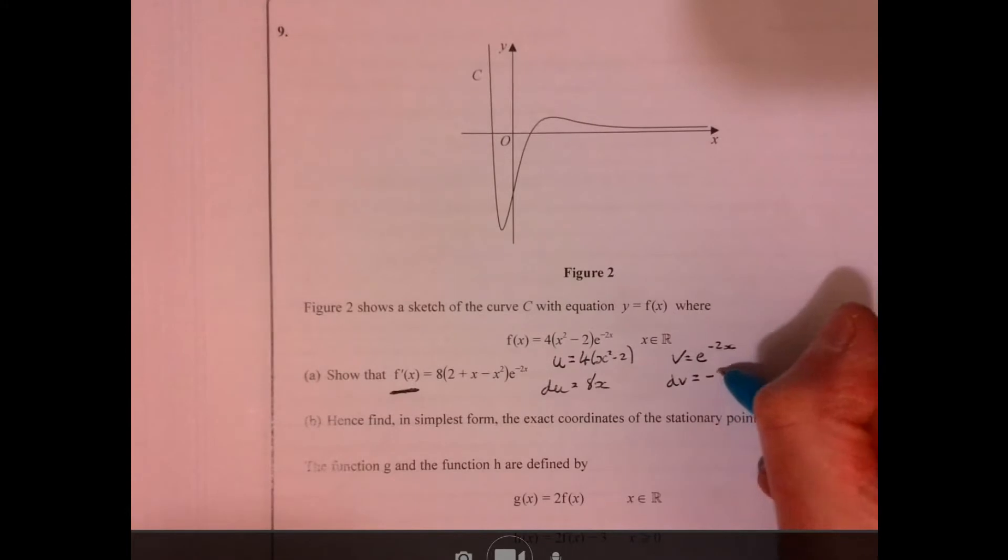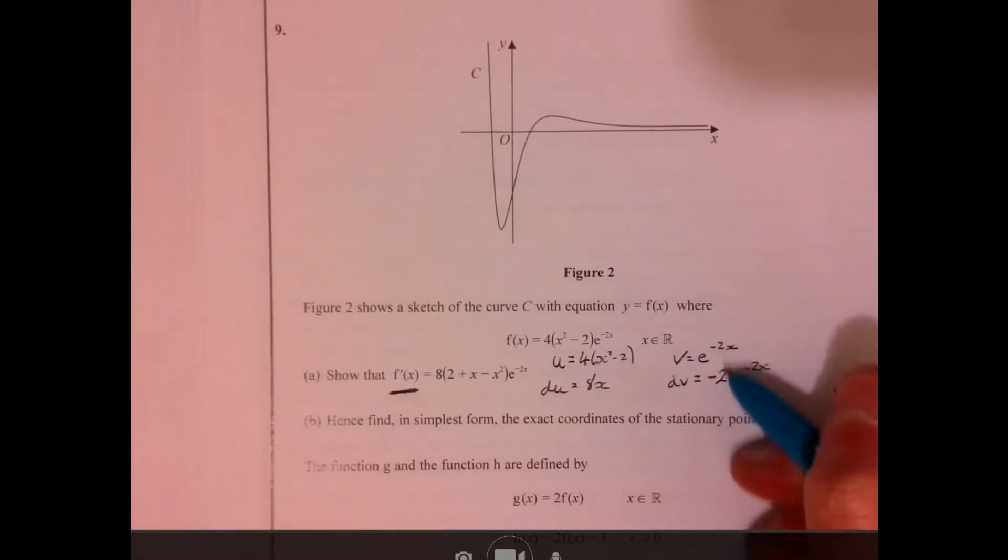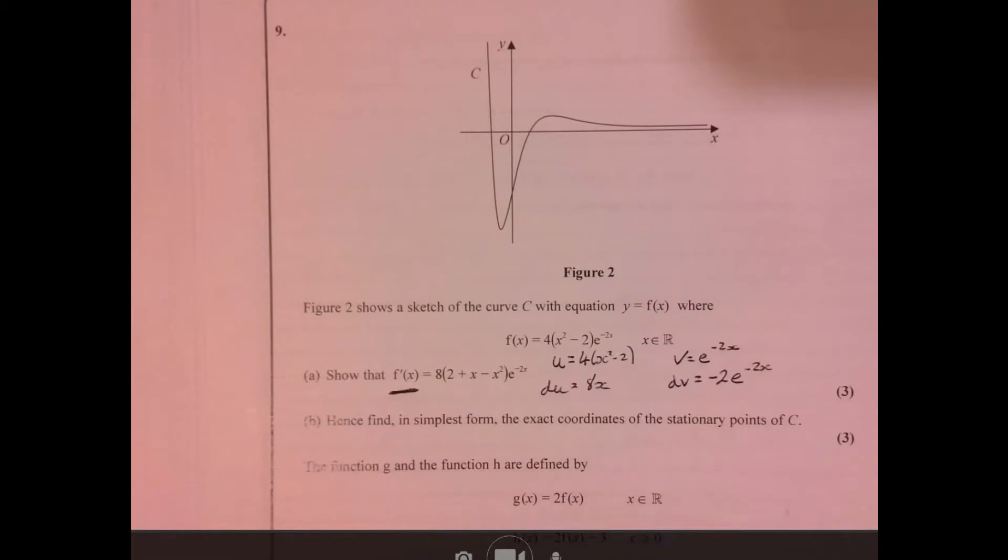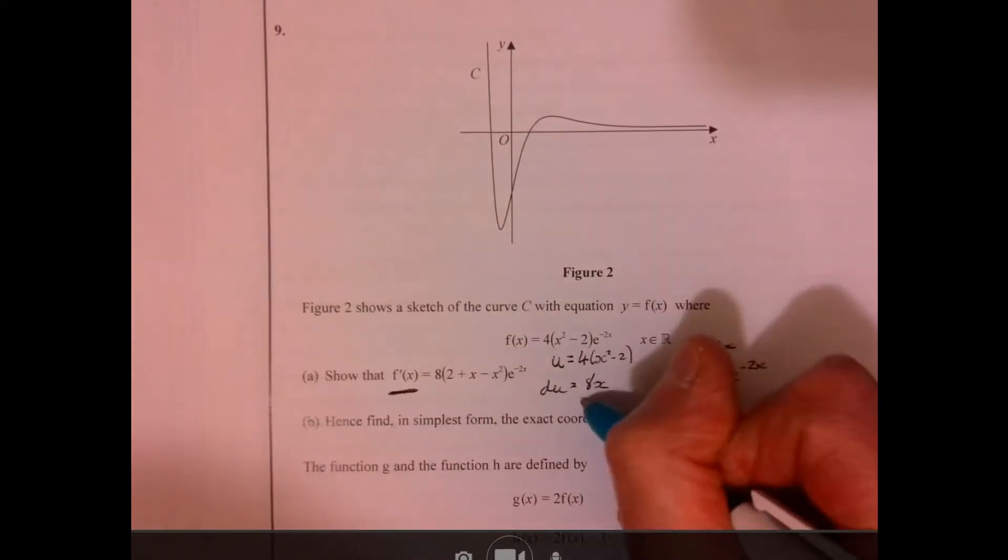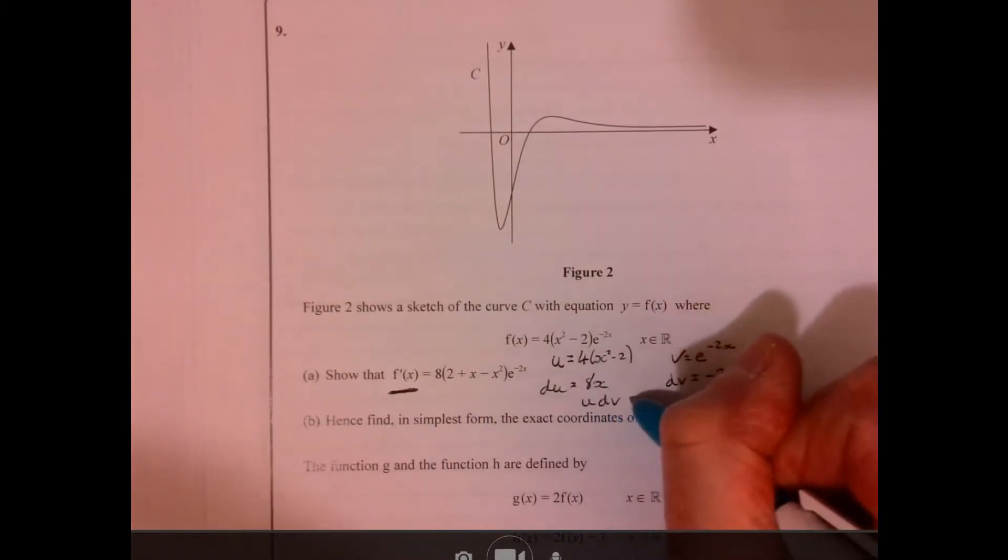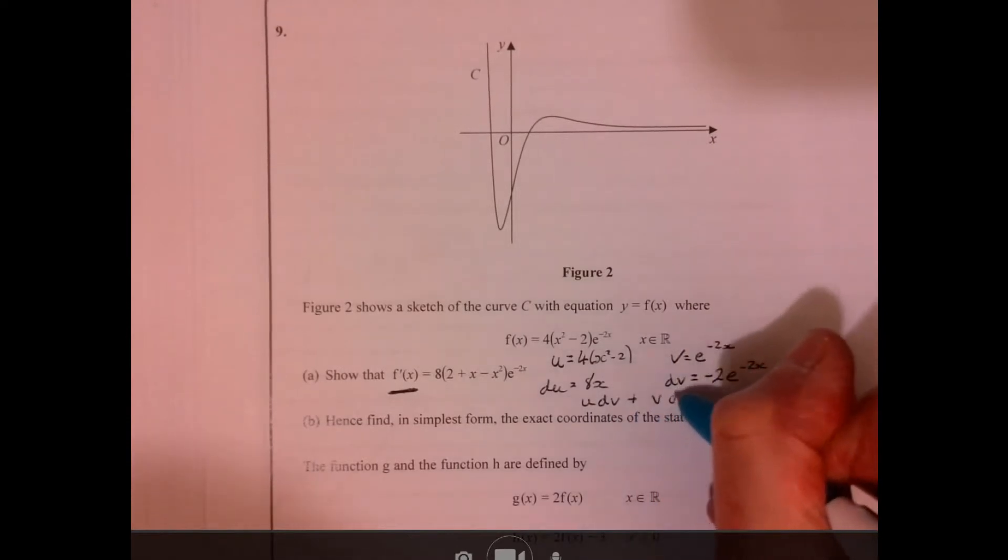That's going to be minus 2e. Might have to do a little bit of chain rule to get that little part. Now product rule is u dv plus v du.